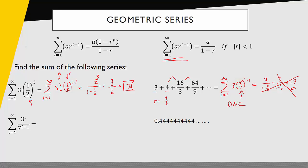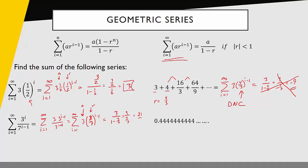For the next case, the tricky part is rewriting it into the formula form — a times r to the i minus 1. I write this as the sum from i equals 1 to infinity, pull a factor of 3 out of the numerator, and rewrite it as 3 times 3 sevenths to the i minus 1. Now I can see my a value is 3 and my r value is 3 sevenths. Applying the formula: 3 over 1 minus 3 sevenths equals 3 over 4 sevenths, which gives 21 fourths as the sum of that series.